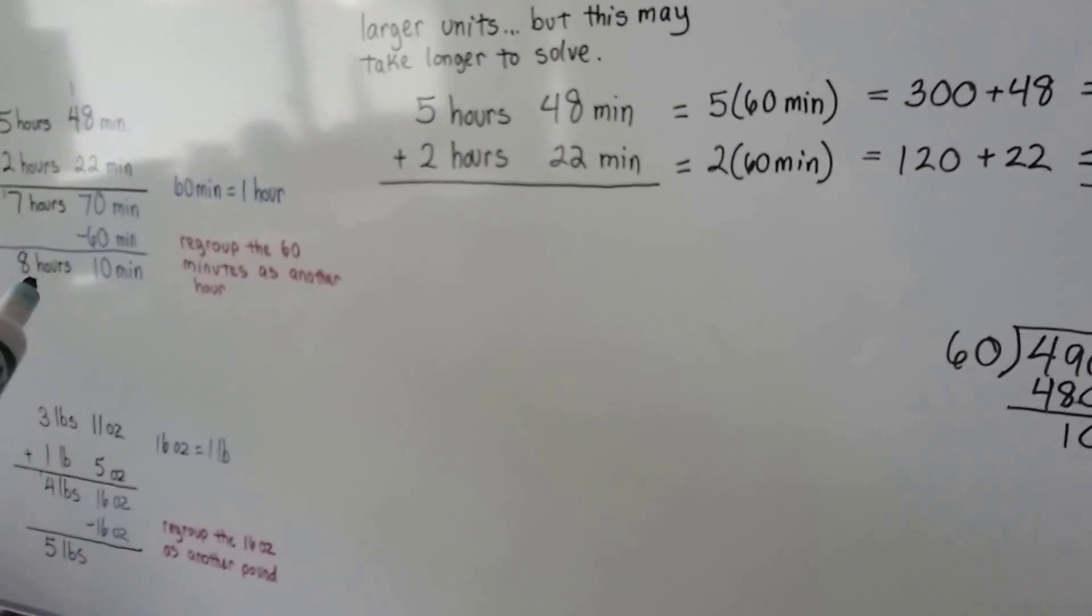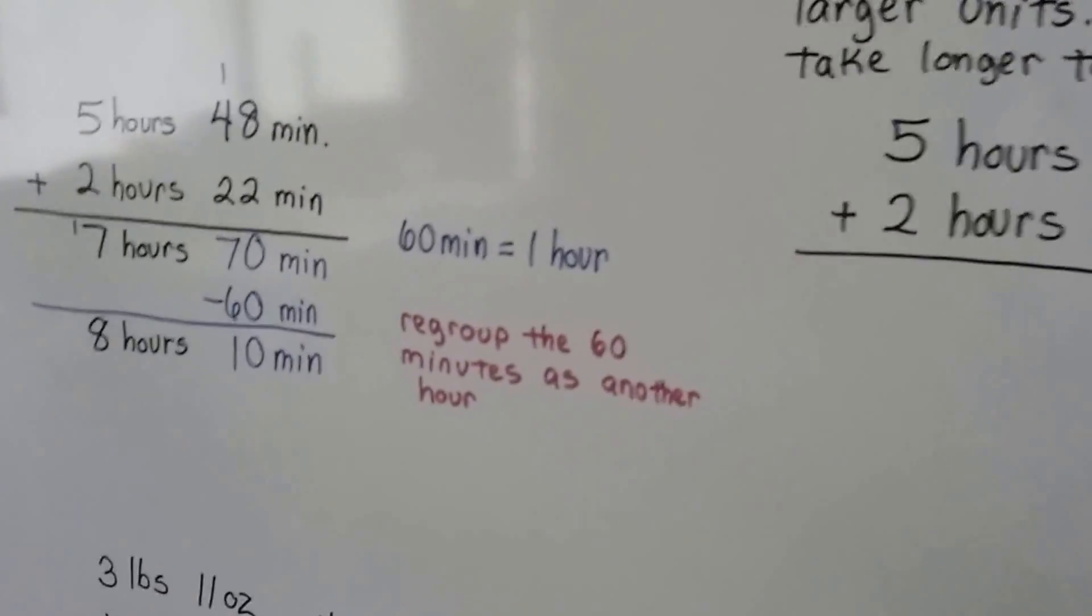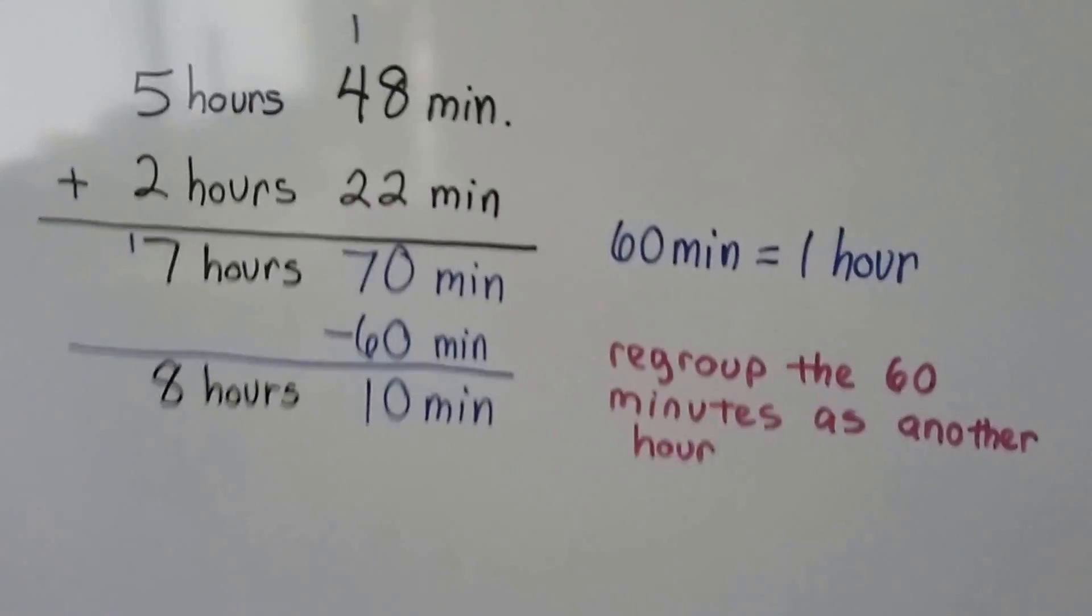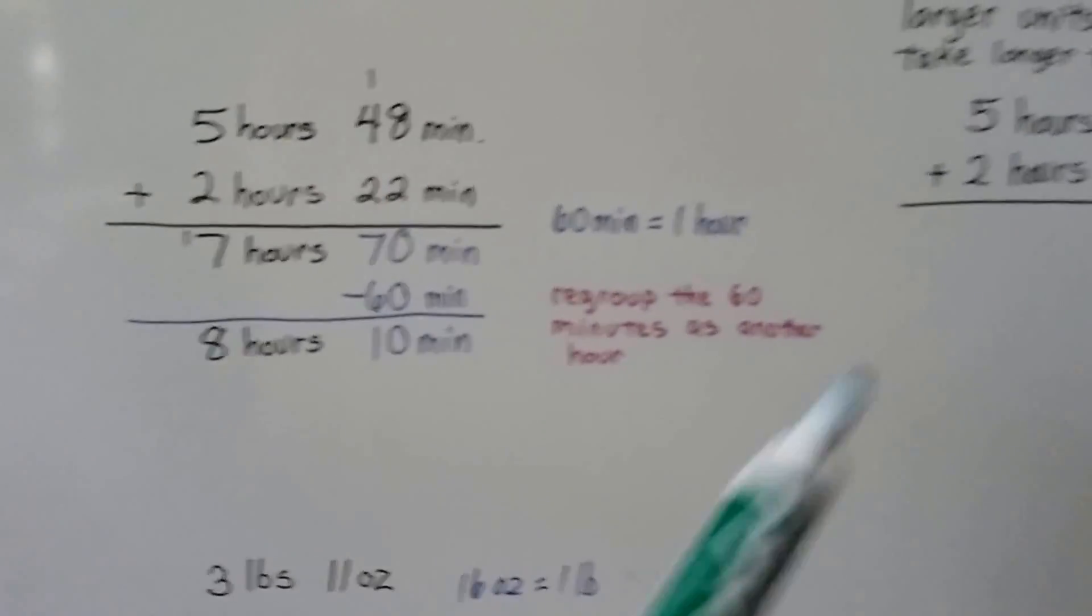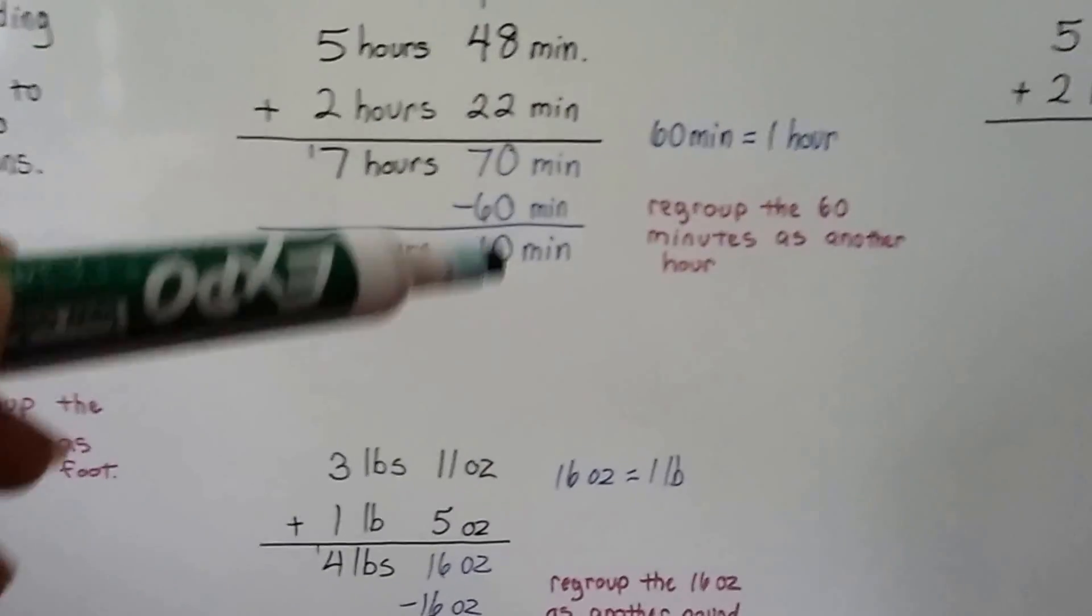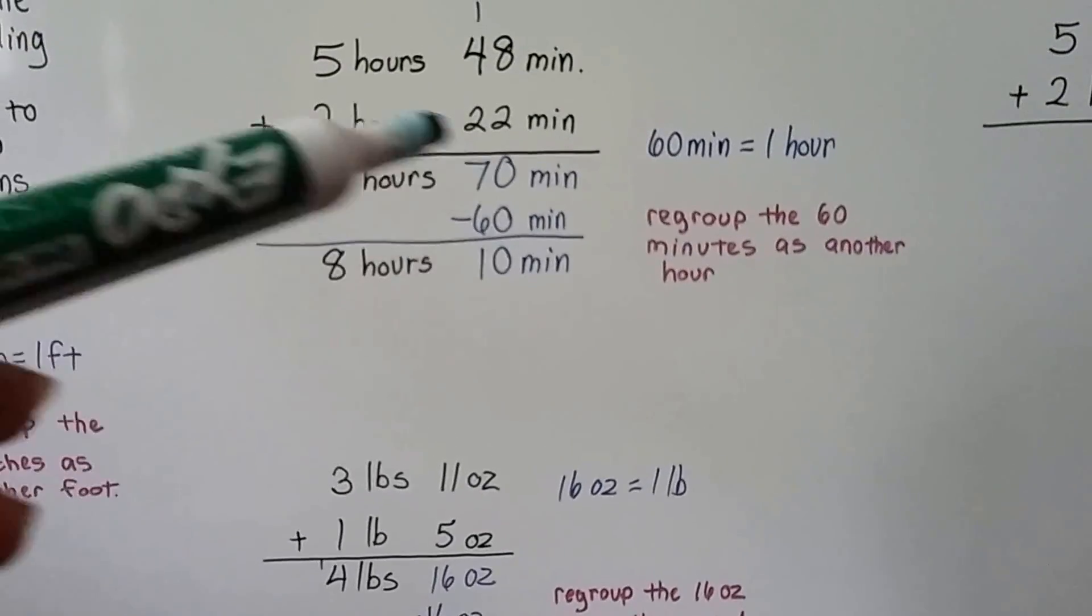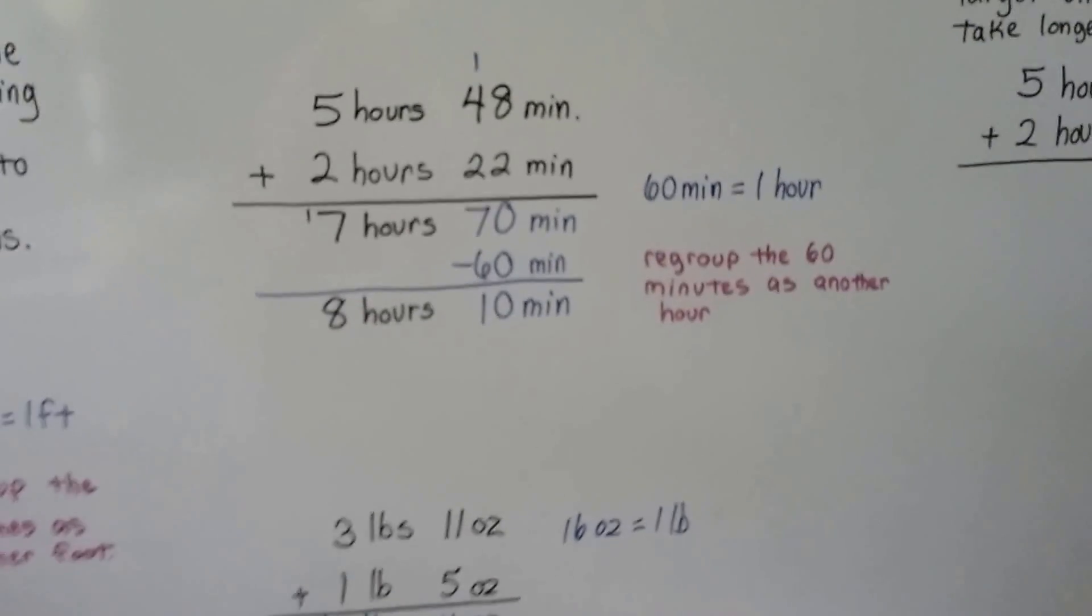Just like we had over here, 8 hours and 10 minutes. See, but it's much quicker to regroup them—it's much faster. You could do it this way, but it's going to take you longer. Just regroup the smaller units to see if you can make a larger unit.